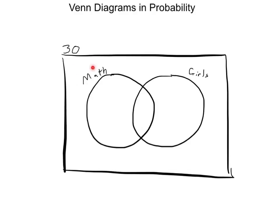What I do — and this is my personal thing, but I think it works well — if a number is describing an entire section, I put it right outside of that section. So if 18 of them are girls, I'm going to put the 18 outside the girls circle. If 10 of them have math as their favorite subject, I'll put the 10 out here. And if you find out that 7 girls like math best, you can put the 7 inside the intersection.